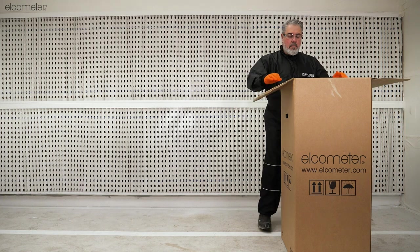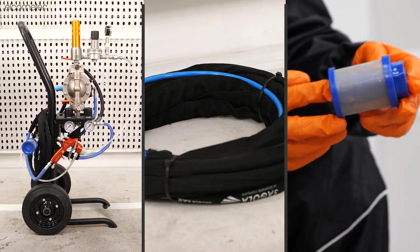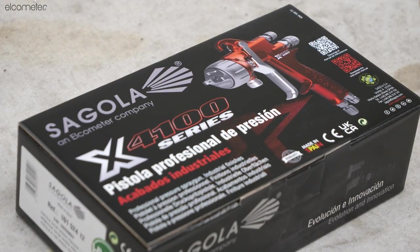The Elcometer CARA pump kit is supplied in two boxes: the pump, hoses, and filters in one box, and the Segola X4100 spray gun in the second.